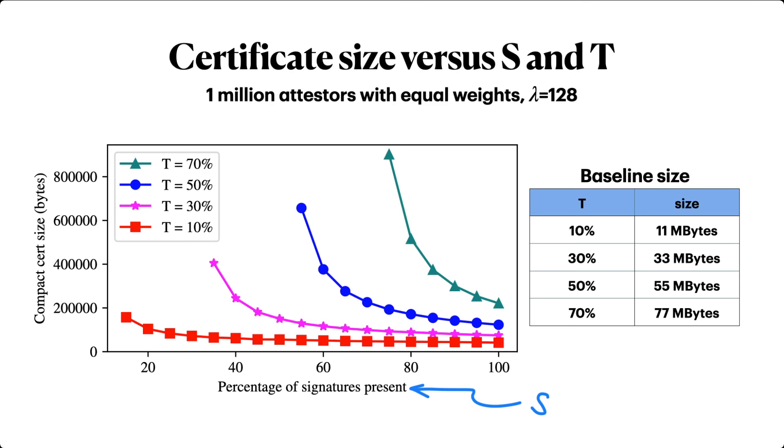In the first experiment I'll describe, we explore the effect of target weight T and total signed weight S on certificate size for 1 million attesters and 128-bit security. As the target weight T goes up, so does the size of the certificate. Meanwhile, as the total signed weight that the prover knows goes up, the certificate size shrinks.